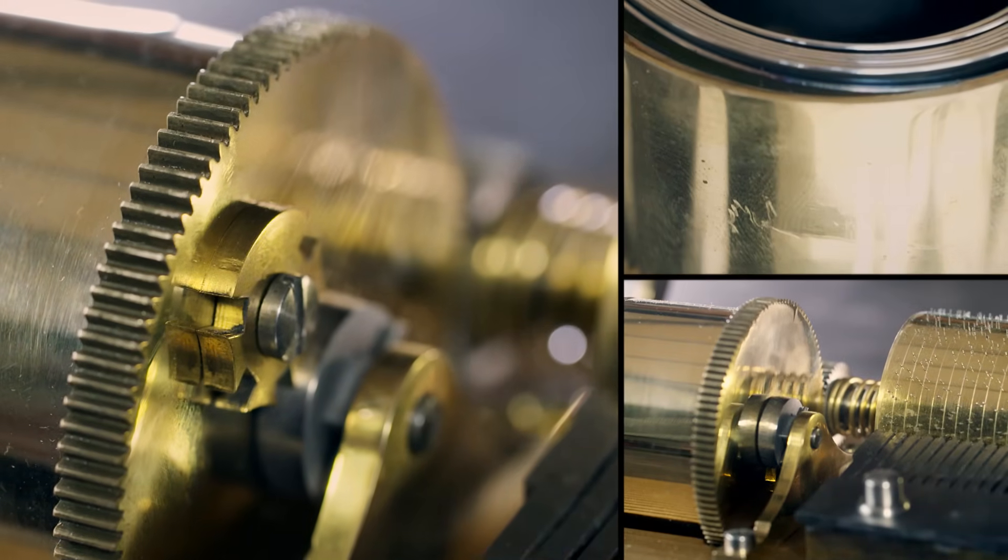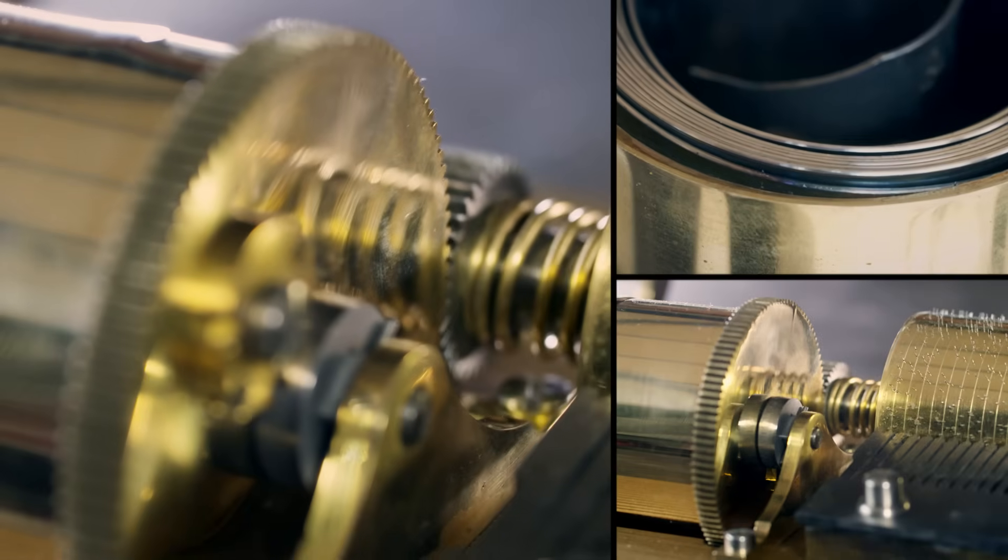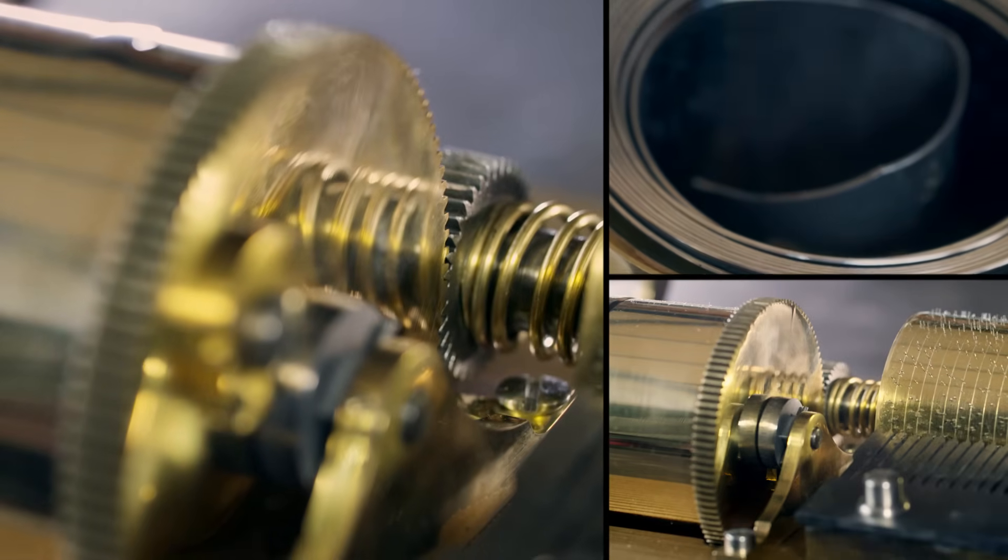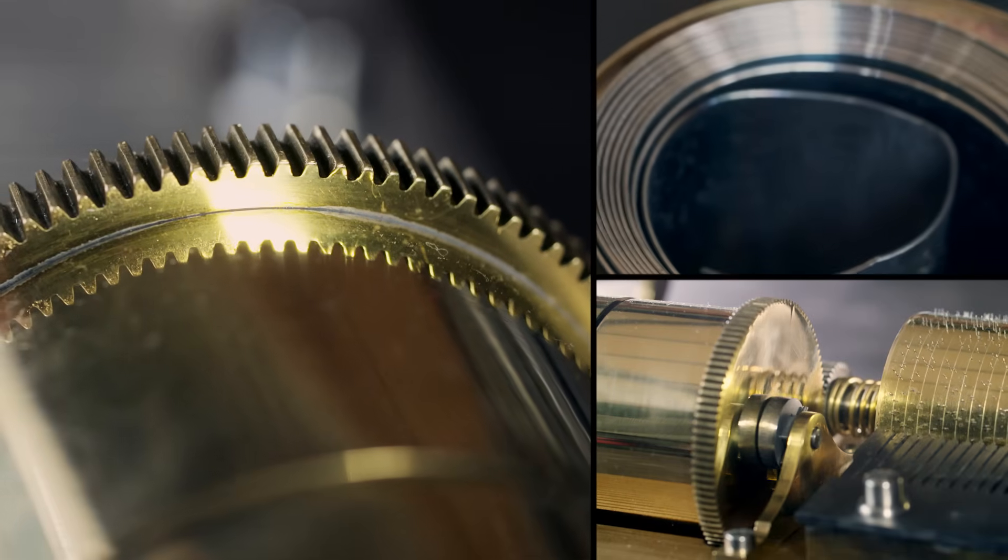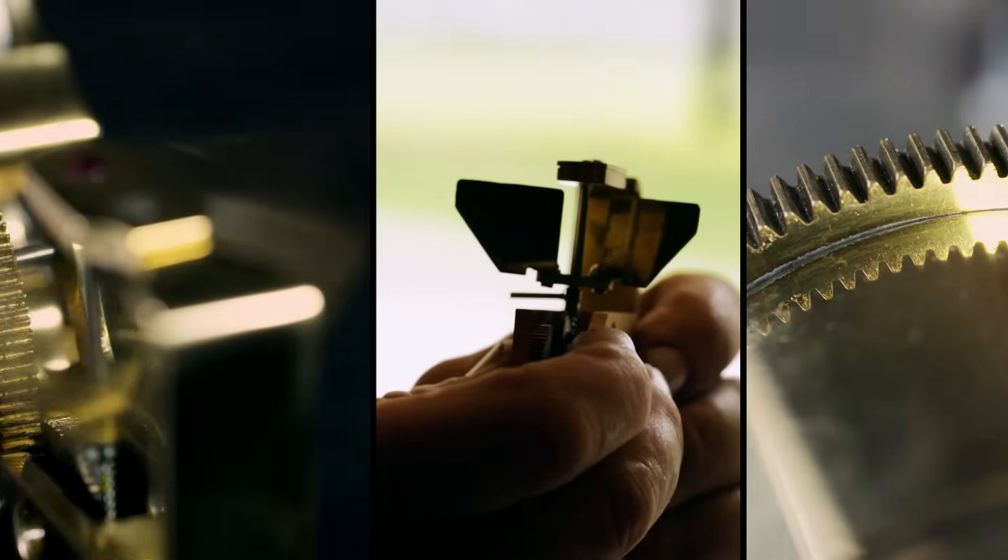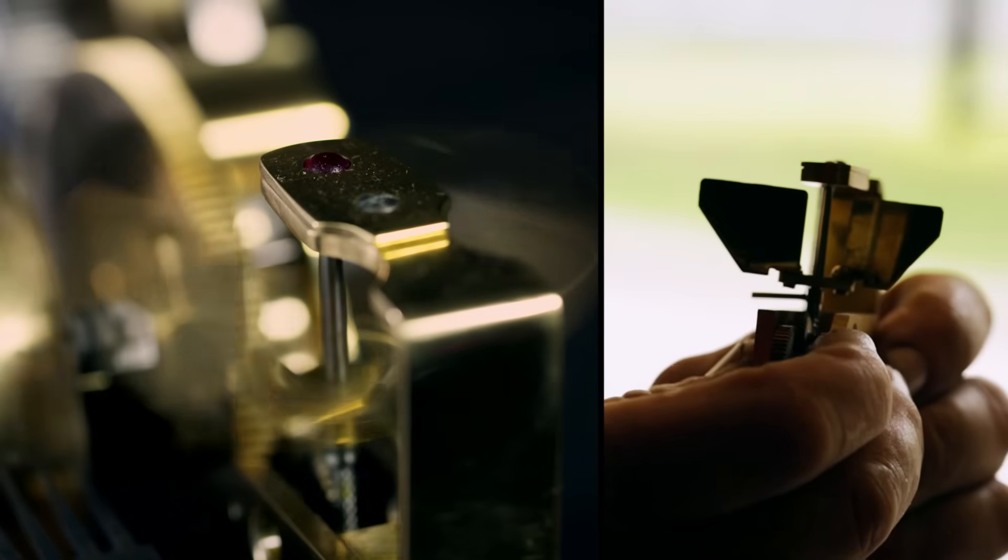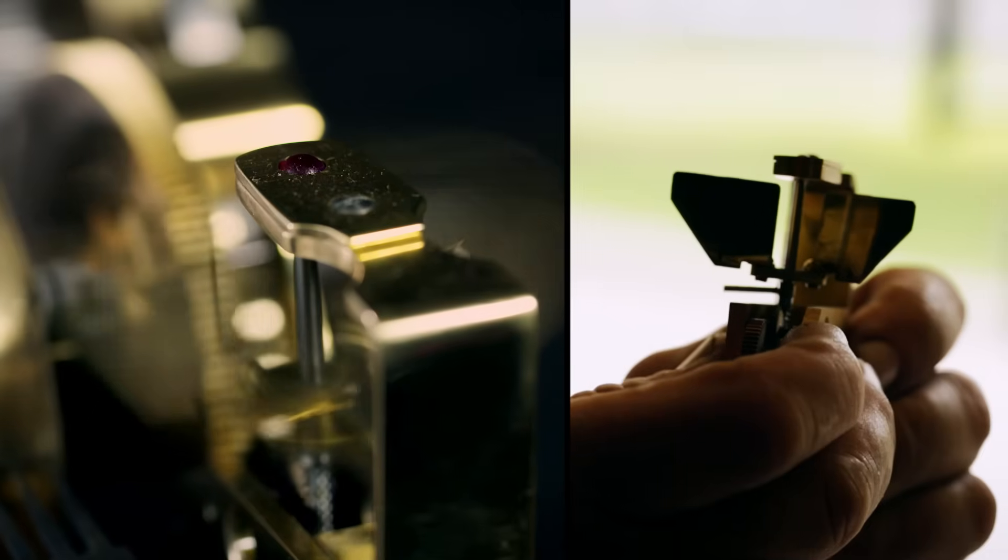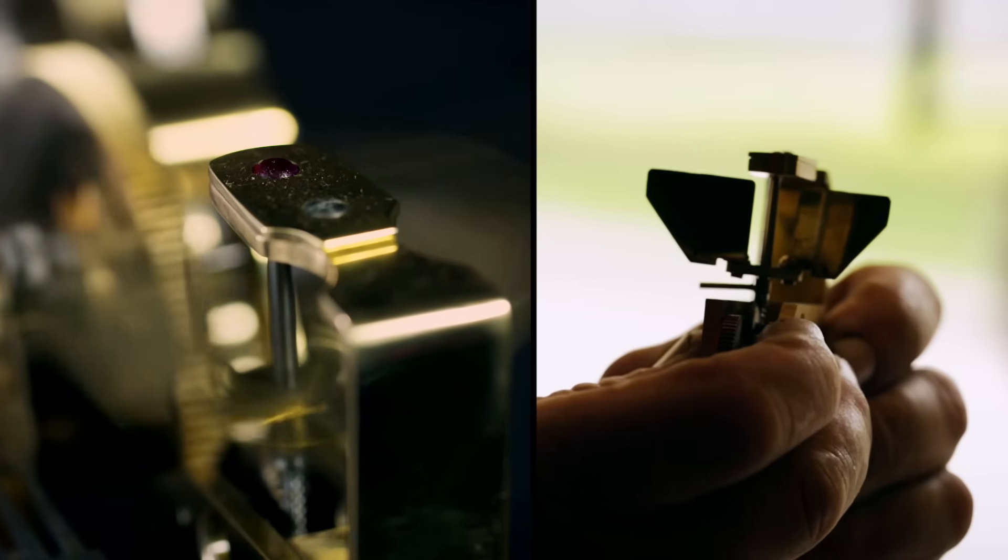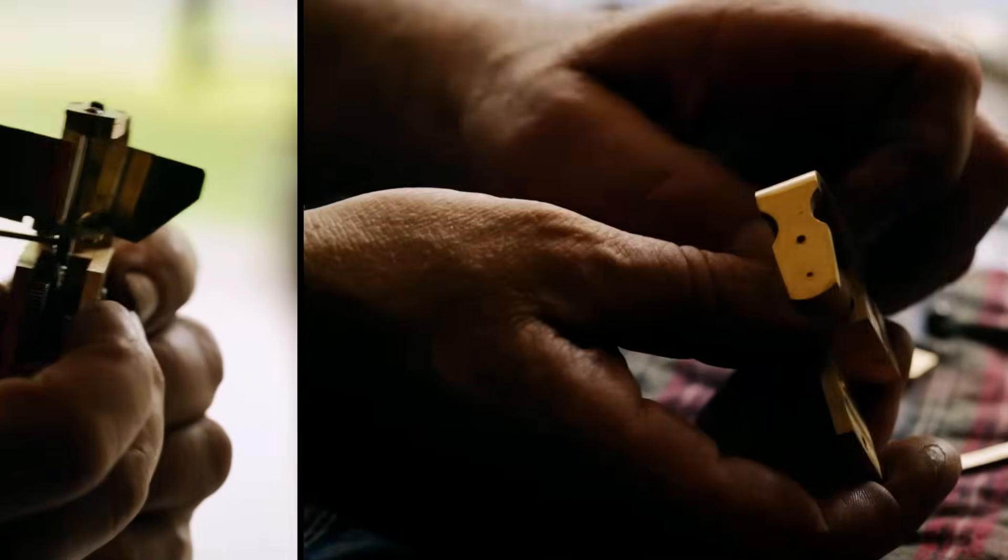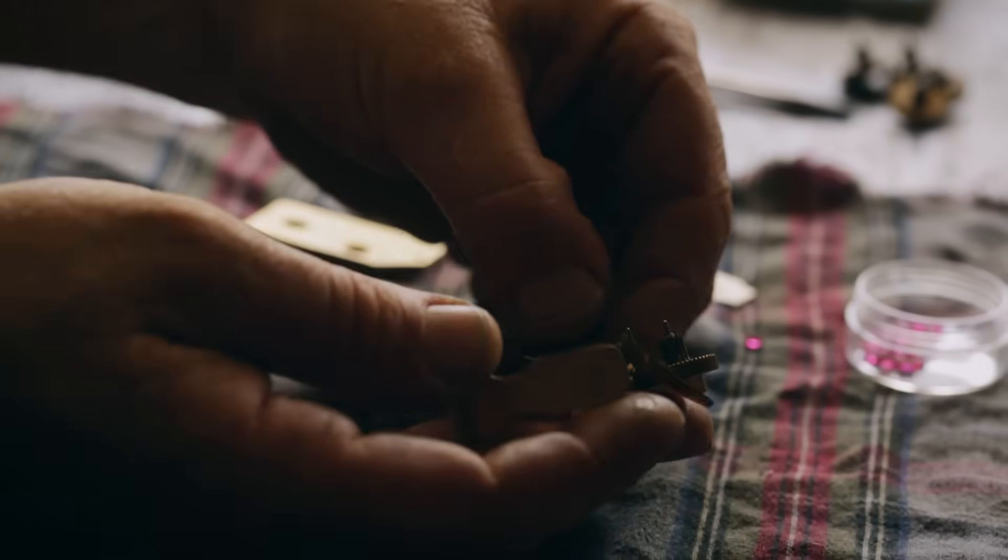The coiled springs store a lot of power. To make sure the cylinder doesn't spin out of control, a mechanism called the governor uses air resistance to keep it in check. This is one of the most important parts of the whole box. If for any reason this governor fails, the cylinder would spin extremely fast and destroy both the pins on the cylinder and the teeth of the comb.